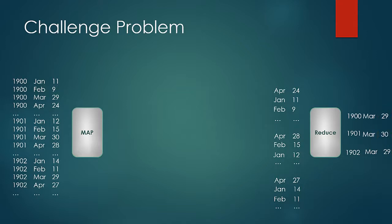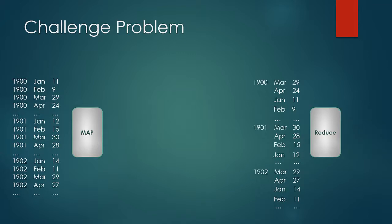Though this is not a recommended approach to find the maximum temperature, to understand the concept of secondary sort we would design our solution this way. The more recommended approach is to simply treat year as the key and not worry about the sorting of values, and have the logic of finding the maximum temperature at the reduce phase. But of course, we are here to understand a new concept. So the challenge is: what should be your key-value pairs at the map phase, and how are you going to make the map output so that you get values ordered by temperature in the input to the reducer?